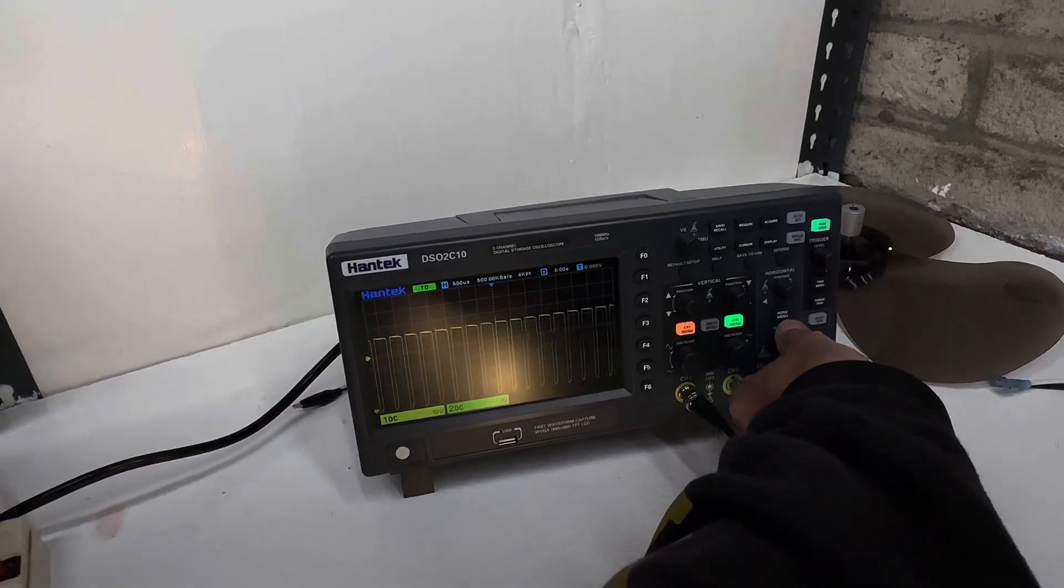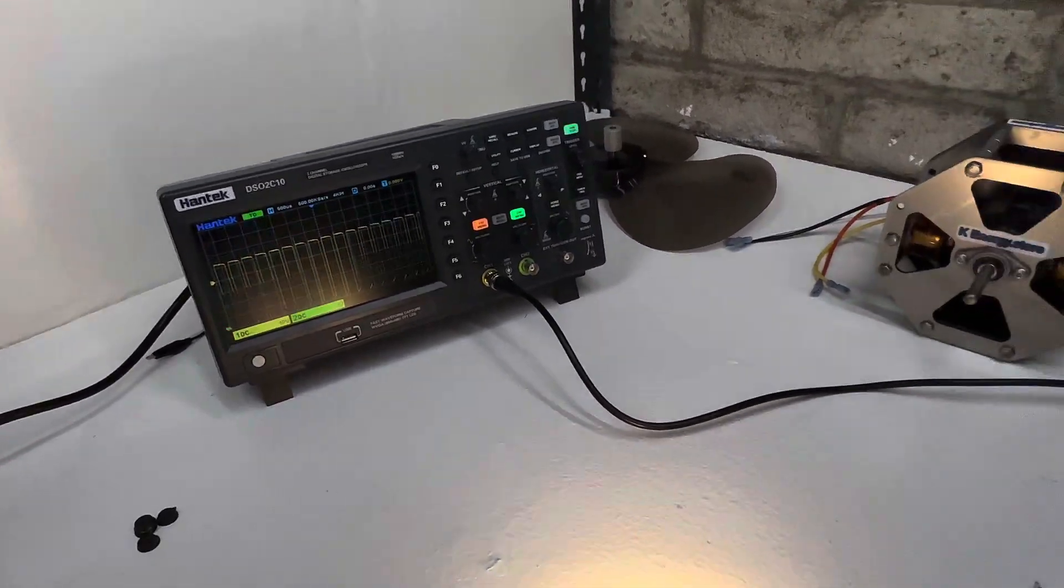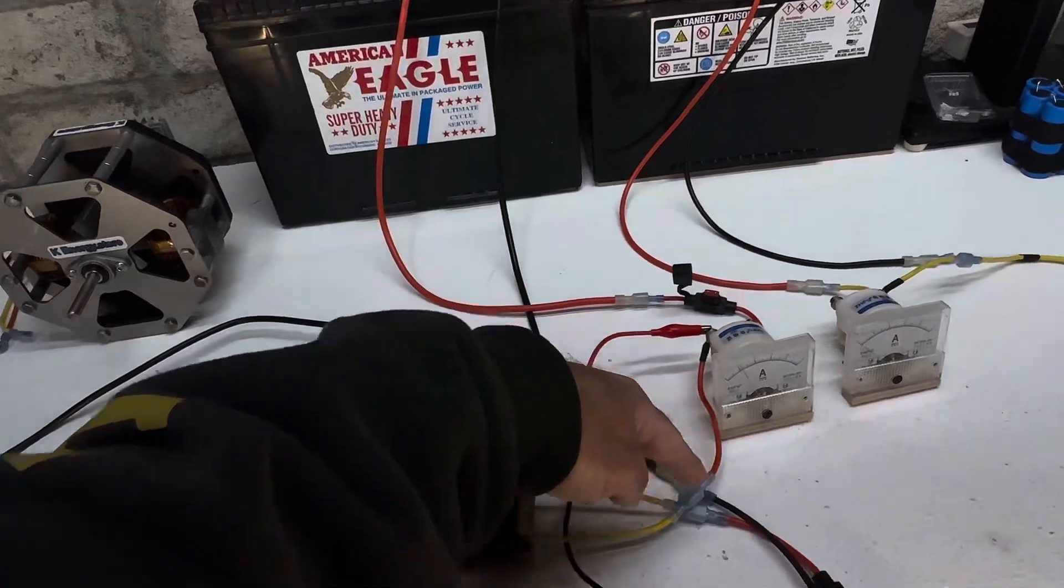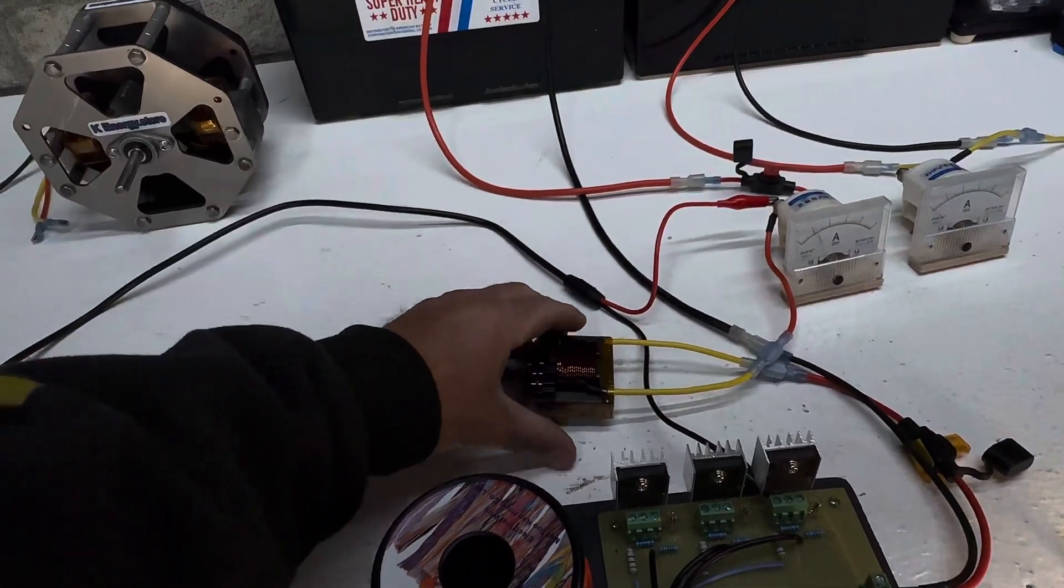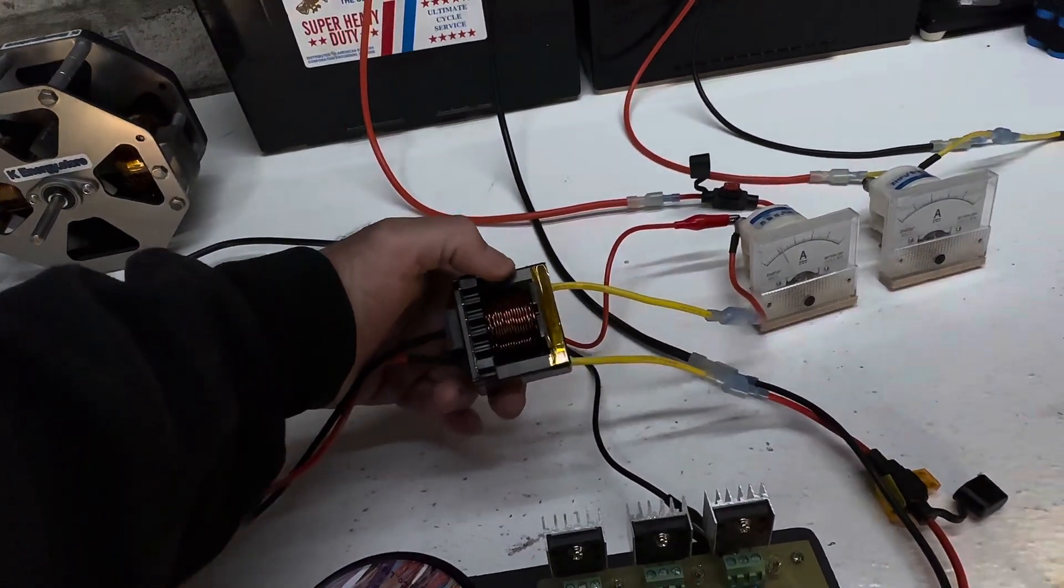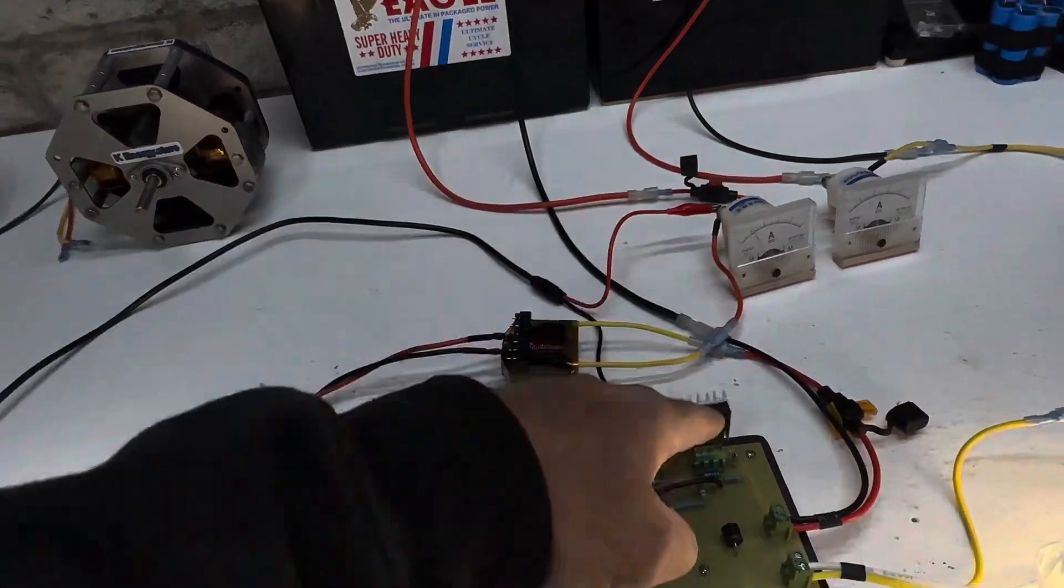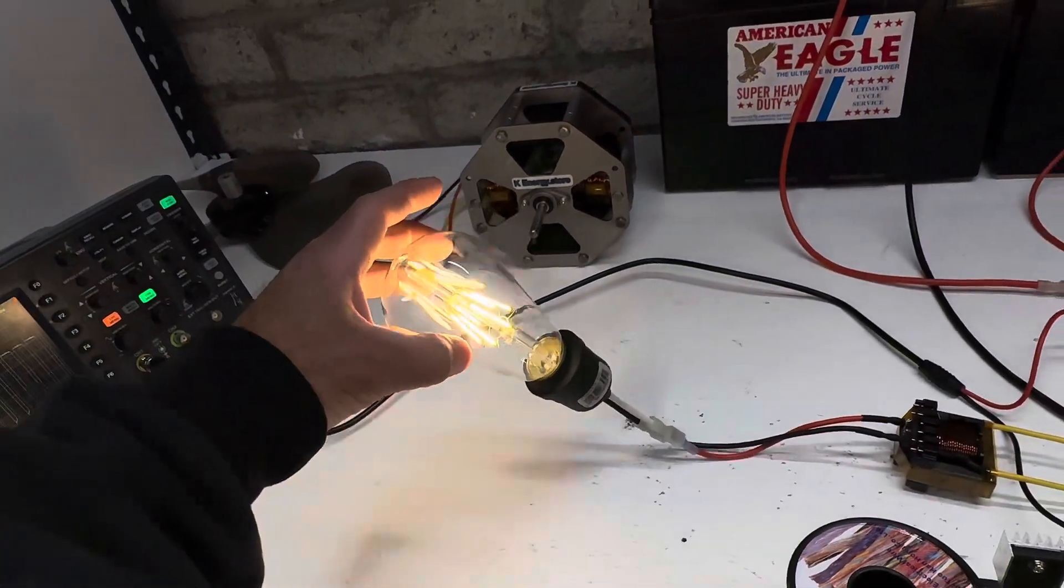So what's interesting is that this is the input wire coming in and it's going right through the transformer and then back to the positive. So it's in series with this and it still makes it work really bright.